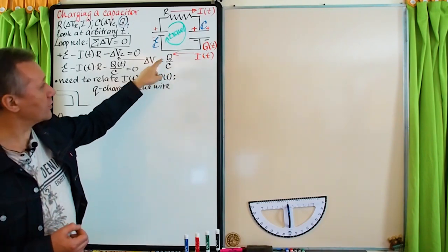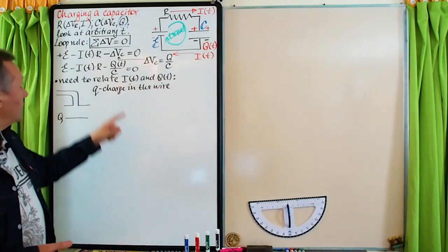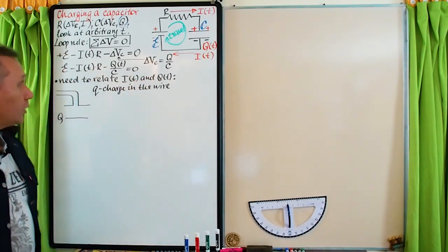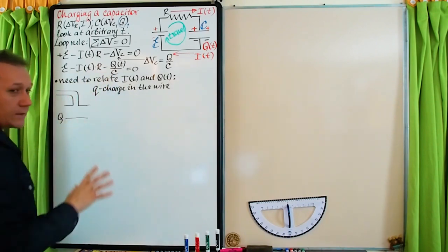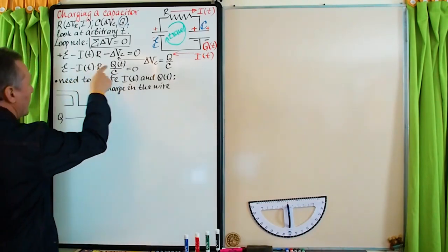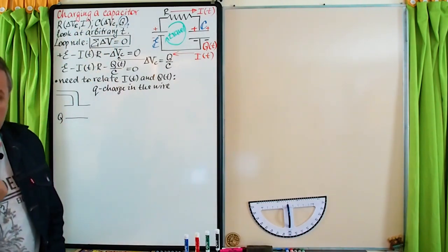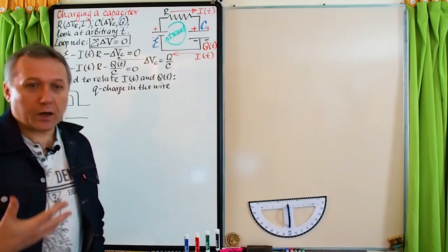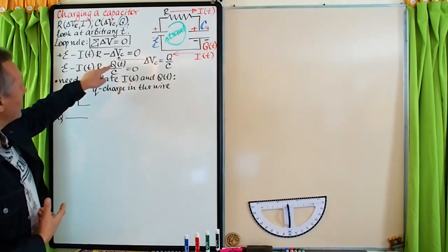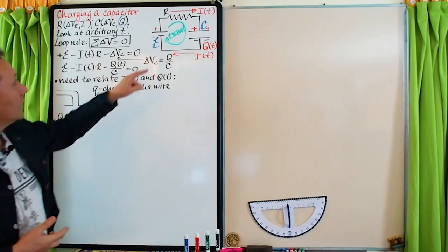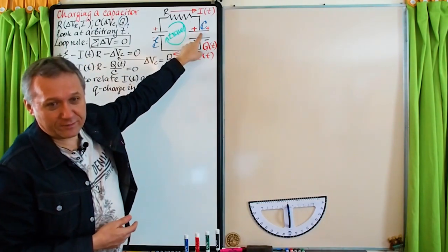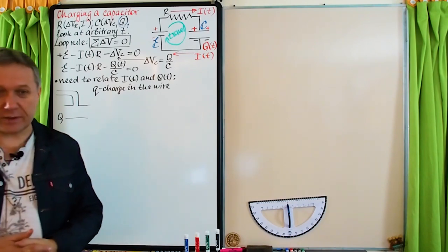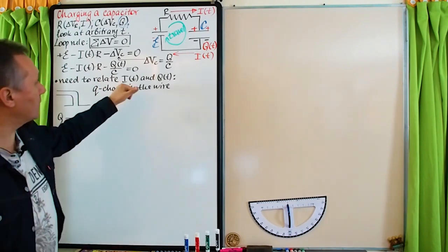From the definition of capacitance, C equals Q over delta V, so delta V equals Q over C. So our loop equation is: EMF minus IR minus Q/C = 0. But we have two unknowns — current I and charge Q — and one equation, which doesn't sound good. However, current and charge must be connected because charge in the capacitor increases at the expense of the current.